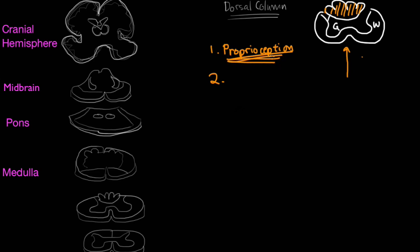And you've got sensing organs within the muscles to tell you that information. Then the second one is tactile sensation, or fine touch. And the third is vibration. Vibration, fine touch, and proprioception.